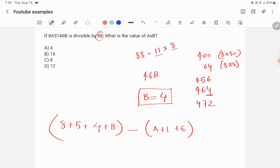8 + 5 = 13, plus 4 is 17, and b is 4, so you get 21. And you get a + 1 + 6 = a + 7. So 21 - (a + 7) = 14 - a, which must be divisible by 11.